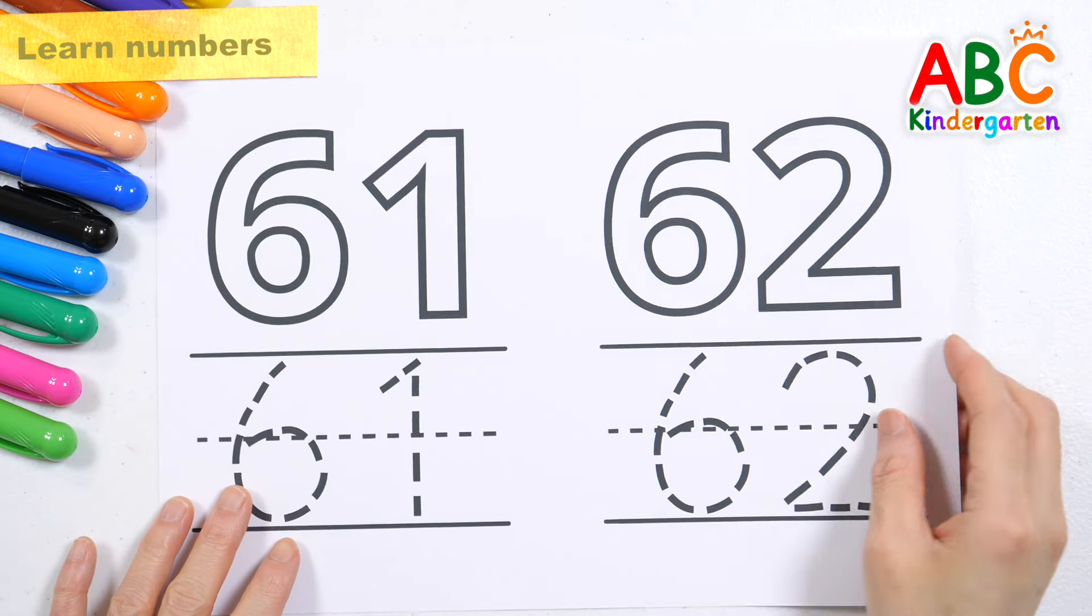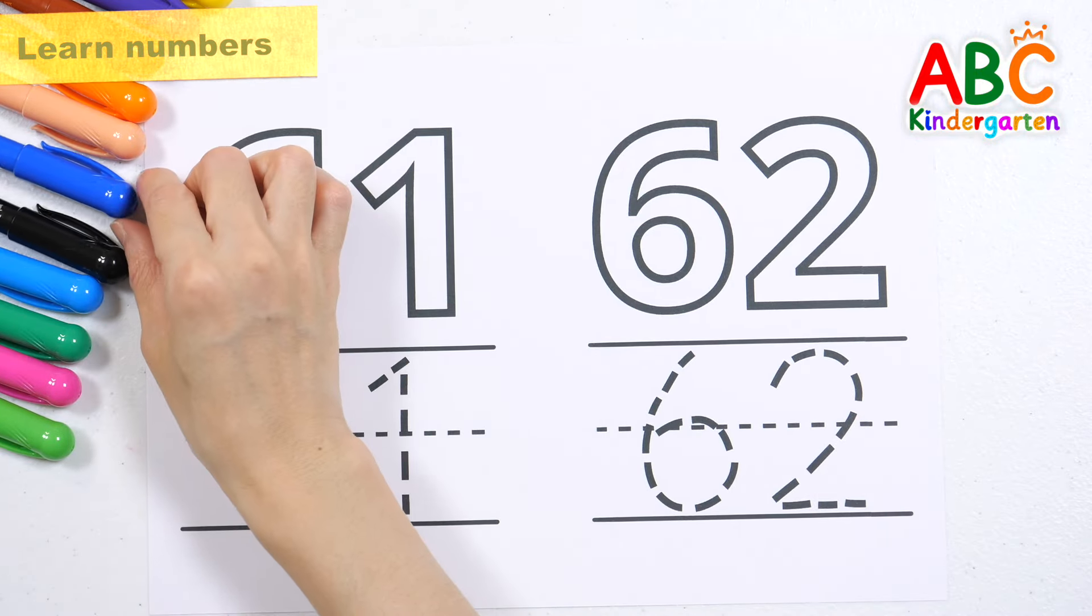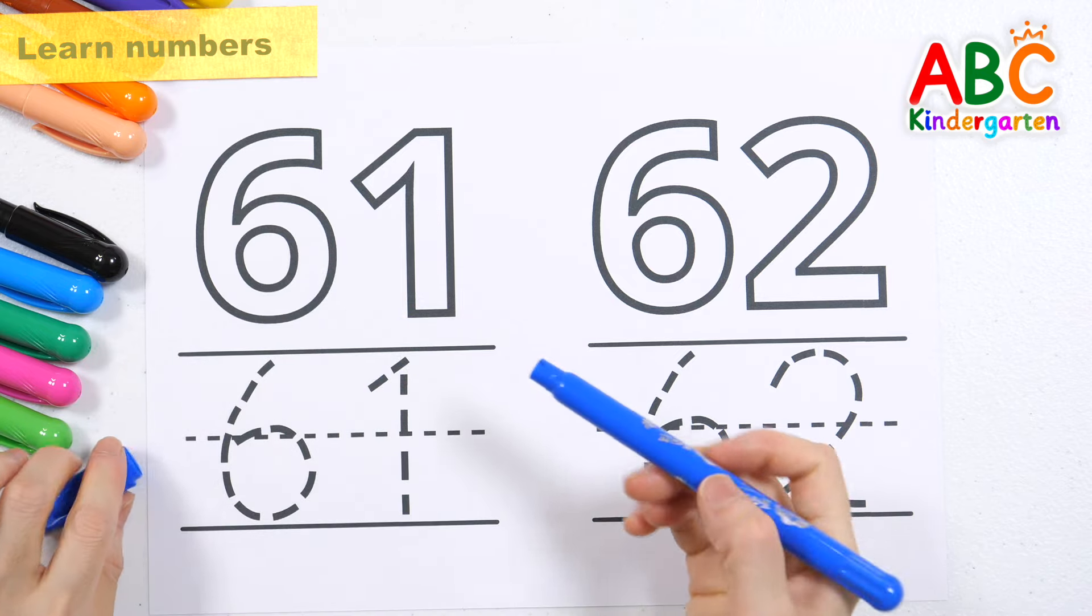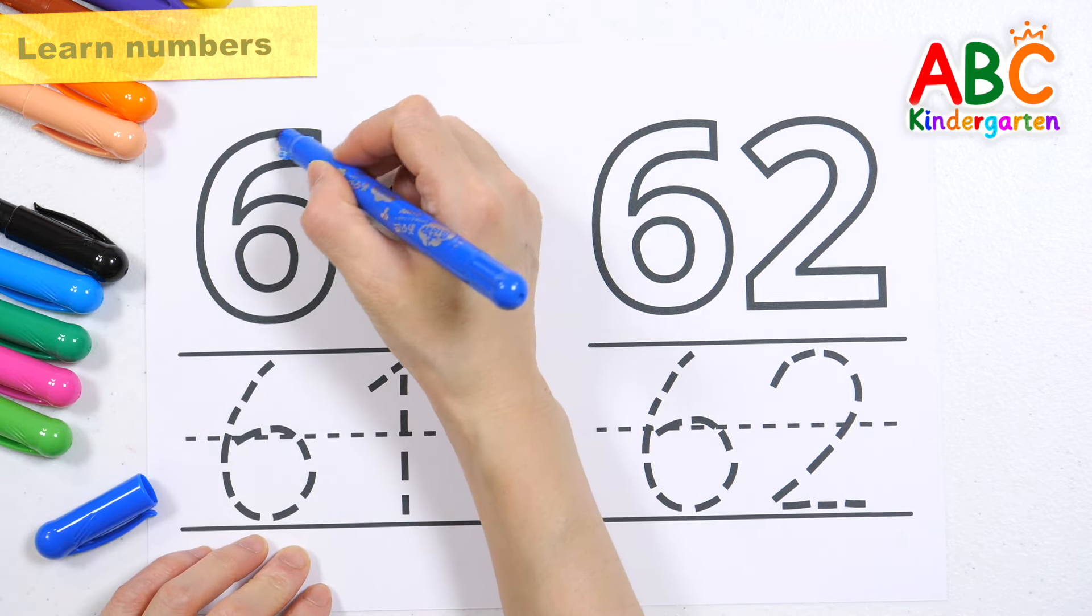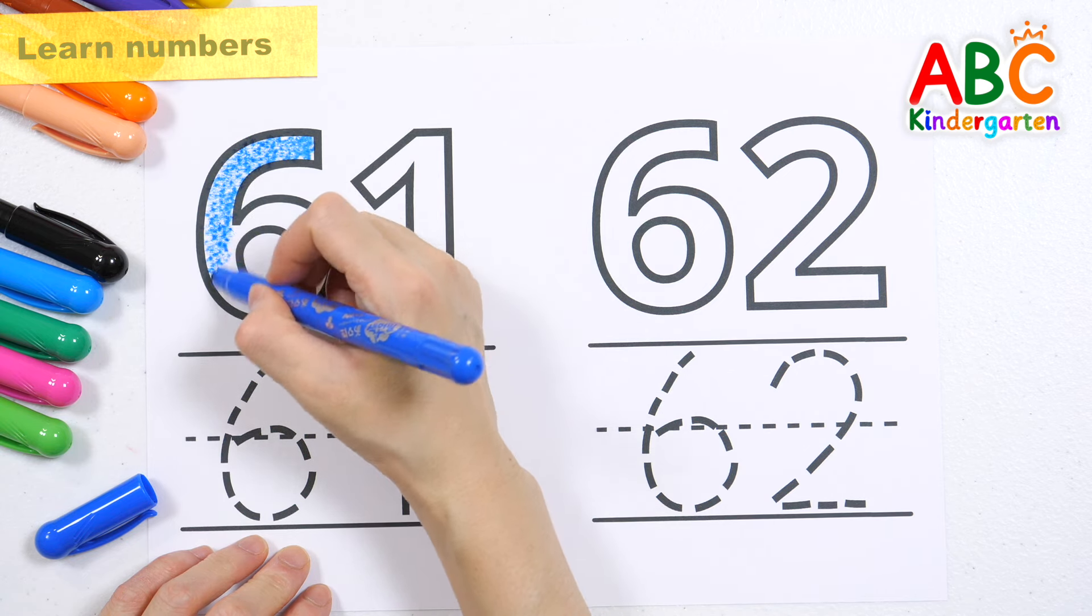Let's color the numbers and trace them on the dotted lines. Let's color 61 with blue. Skip to My Lou song begins.